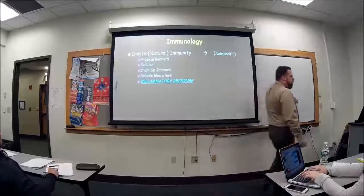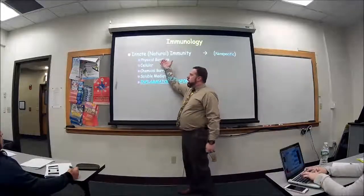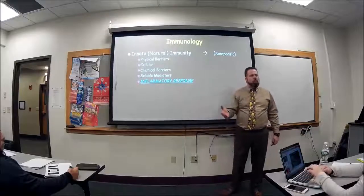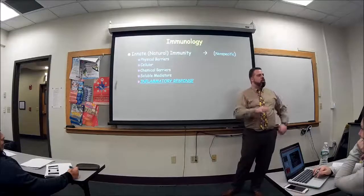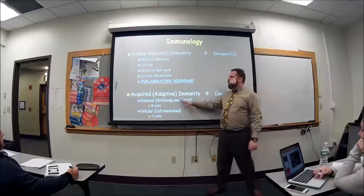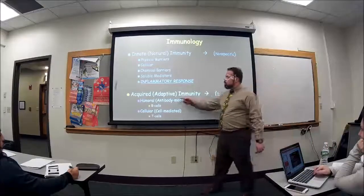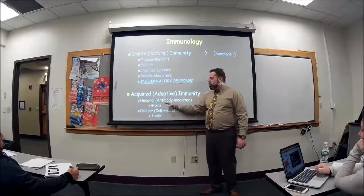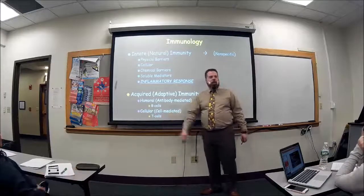So immunology is broken up into two things: we have the innate or natural or nonspecific — your physical barriers like skin, chemical barriers, soluble mediators, inflammatory response, the five cardinal signs, your tears, antibiotics in your earwax — all nonspecific, warding off good and bad things. Then you've got the acquired or adaptive, which is either dealing with antibodies — called humoral, done by B cells — or non-antibodies, which is cell-mediated, done by T cells.